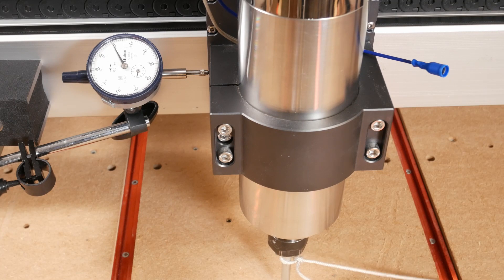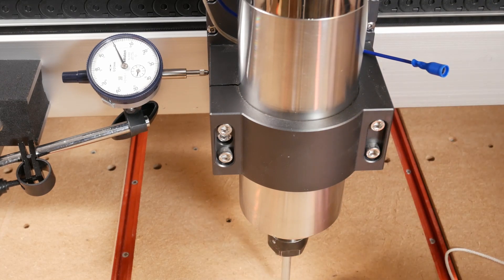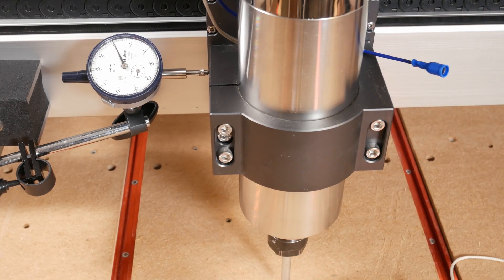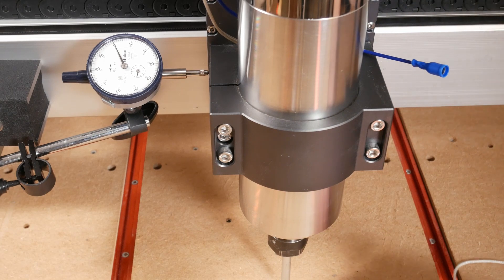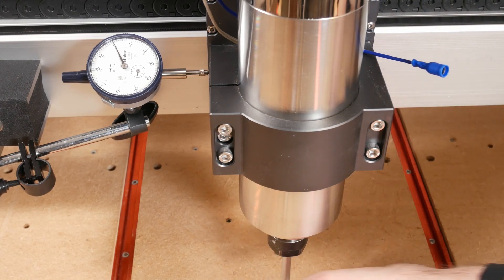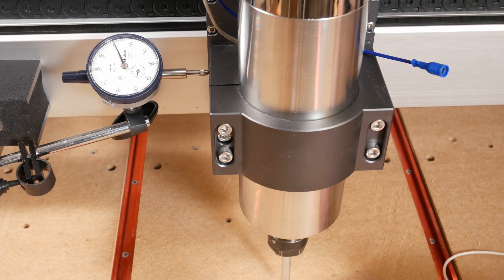When cutting, deflection can cause a couple of problems. First, it can cause cutter engagement to be larger or smaller than we intended. This affects the cutting load. Second, and more of a problem on a light machine like the Shapeoko, is the machine can start to vibrate and resonate with the deflection of the cutting loads.